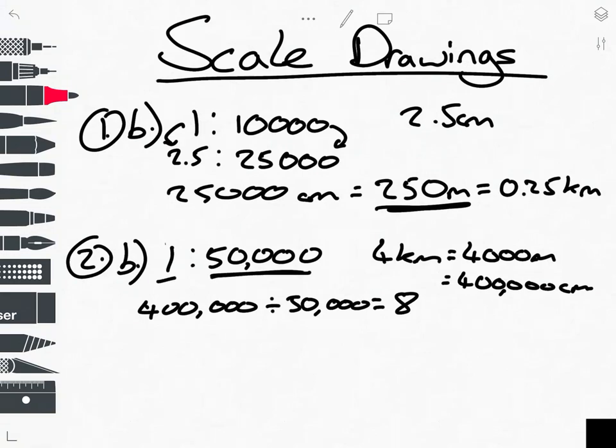So if we know there's 8 lots of this, 8 lots of this. So it's just 8 centimetres would be your answer. So it's like we times this by 8 to get to 400,000. So we times this by 8 to get our 8 centimetres. So hopefully that will help you out with the other ones. And then you've got some slightly trickier ones. But if you just use the same sort of methods, you should be OK.